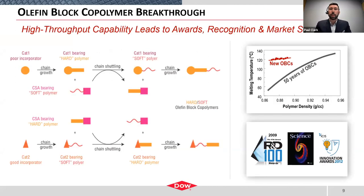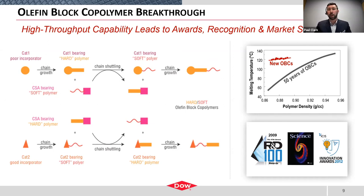One particular example worth highlighting because it truly emphasizes the power that high throughput brings to bear is our chain shuttling catalyst technology, which was the subject of a Science paper. Essentially, we have two different catalyst species. Catalyst 1 is a poor incorporator, while Catalyst 2 is a good incorporator. What they are incorporating is a co-monomer — a species that softens the very rigid, glassy, crystalline architecture of a polyolefin. Catalyst 1, a poor incorporator, starts growing a polyolefin chain — a hard segment, very ethylene-rich. If Catalyst 2 were growing its own separate chains, we would have a binary mixture of hard polymers with very soft polymers. That mixture alone doesn't really gain you anything from a materials properties perspective — it's a real challenge to get the rigidity and material properties you want while maintaining moldability.